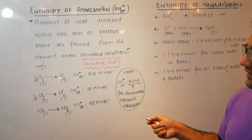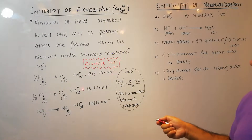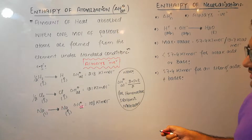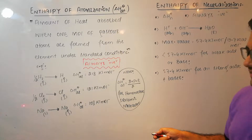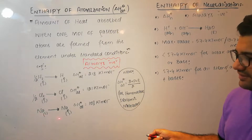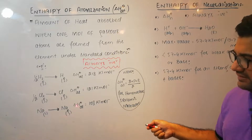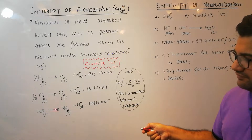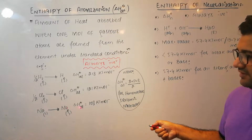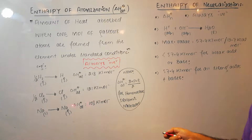For example, the enthalpy of atomization of hydrogen is 218 kJ per mole, and chlorine is 121 kJ per mole. The third example is very interesting: in the case of sodium, when it is directly changed from solid to gaseous — one mole of gaseous atoms in the product, formed from the element — the enthalpy of atomization is 108 kJ per mole.